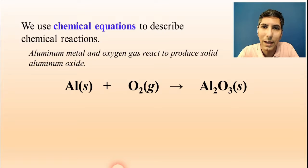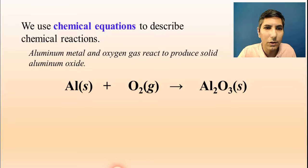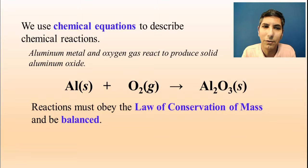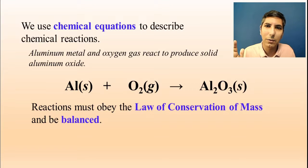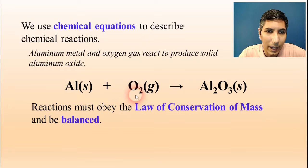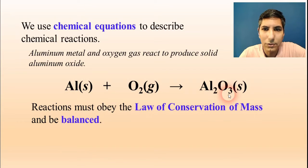(aq) for aqueous means dissolved in water, and (l) for liquid. Whenever we write a chemical equation, we need to obey the law of conservation of mass — meaning the number of atoms of each element on the left side of the equation must equal the number on the right side. As you can see, that's not really happening in our example: we have two oxygen atoms on one side and three on the other, so we have to balance that.